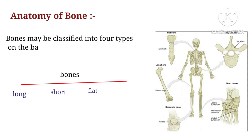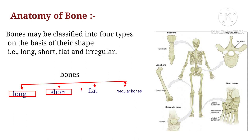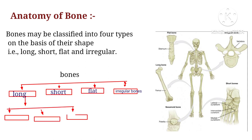Basically, you can classify bones according to 4 types which you have already studied: long bone, short bone, flat bone, and irregular bone.